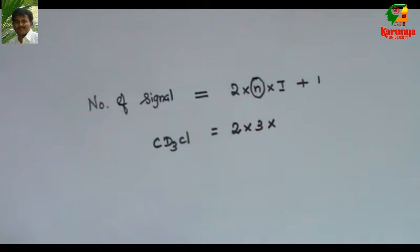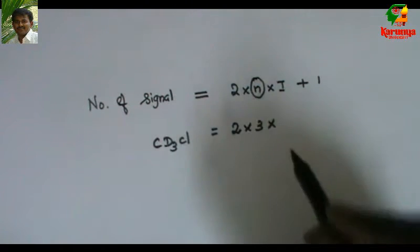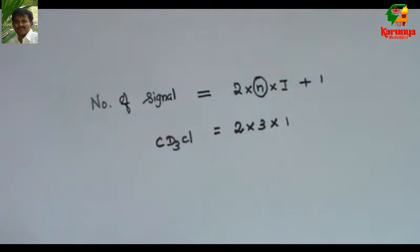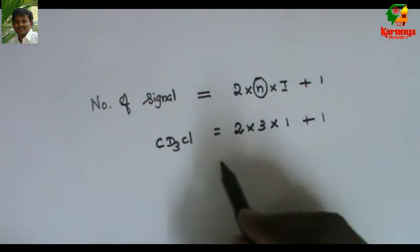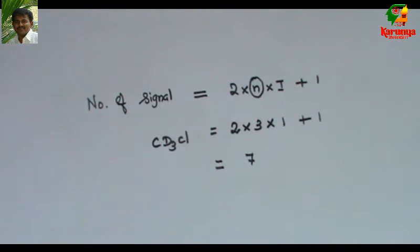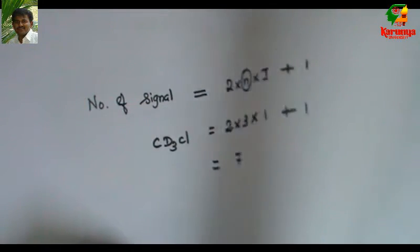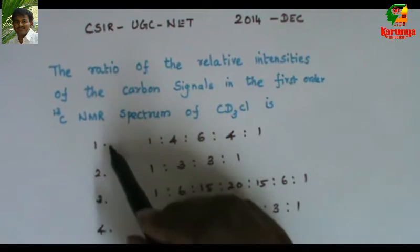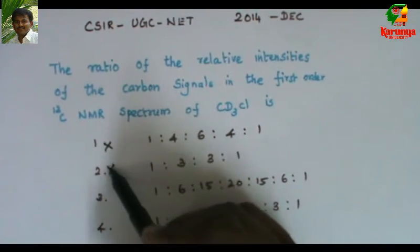What about I? For hydrogen, the spin value is half, but for deuterium it is 1. So the signal should be septet. If you know this, you can eliminate two options, that is first and second.